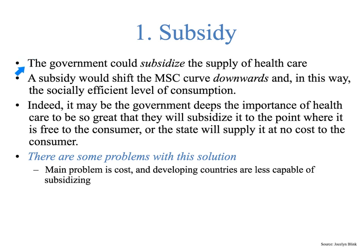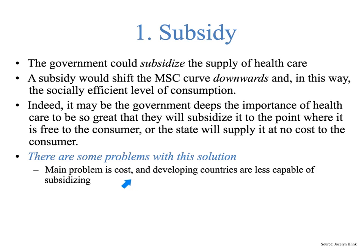First, the subsidy. The government could subsidize the supply of health care, and the subsidy would shift the marginal social cost curve downward — the social cost curve is the old supply curve. In this way, the socially efficient level of consumption, which is Q2, could be realized. Indeed, the government may keep the importance of health care so great that they will subsidize it to the point where it's free to the consumer. The problem with any subsidy is cost — where is the government going to get the money? The less developed the country, the less capable they are of subsidizing health care, which is why more developed nations tend to have healthier societies.